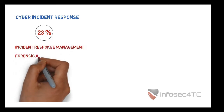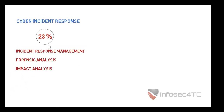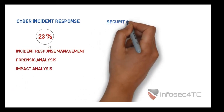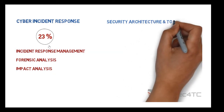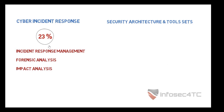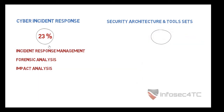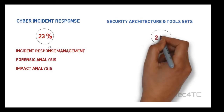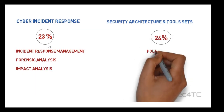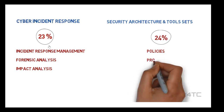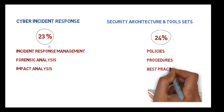The fourth and final domain will be about security architectures. This is a very important domain — it represents 24% of the exam questions — and it covers things like best practices, policy and procedures, guidelines, and baselines. I believe, realistically, most of these domains will be very important, not just to pass the exam, but also to be ready to work in the information security field.